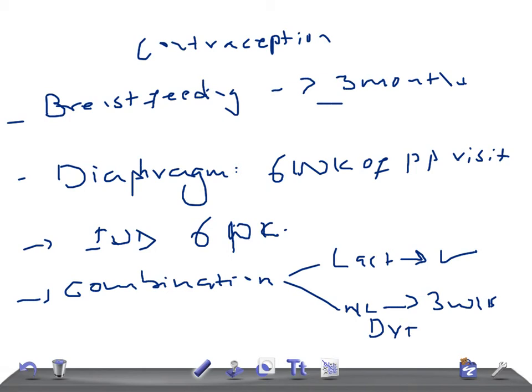The other option is progestin contraception. Progestin steroids like mini pills, Depo-Provera, and implants do not diminish milk production, so can safely be used during lactation. They can begin immediately after delivery.